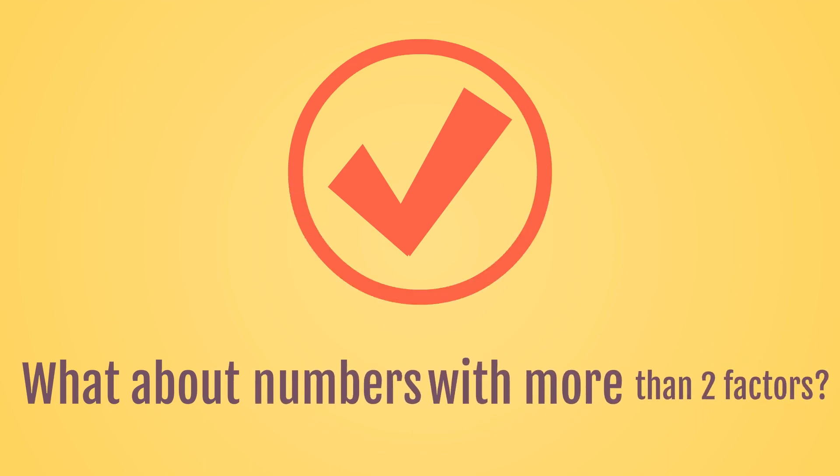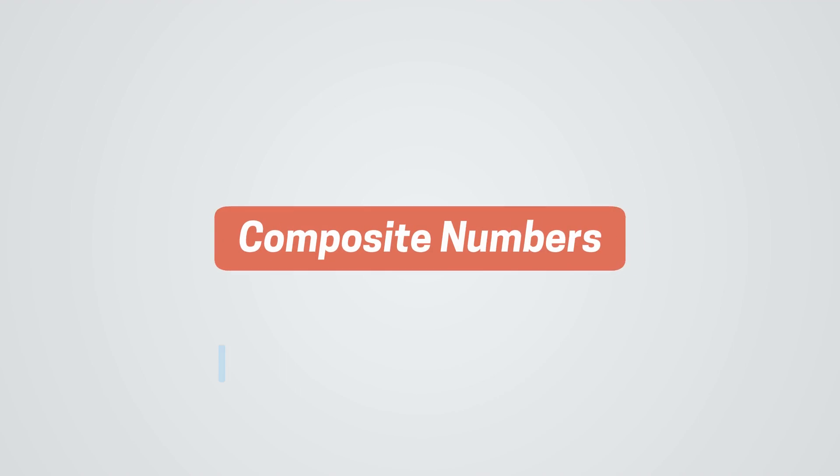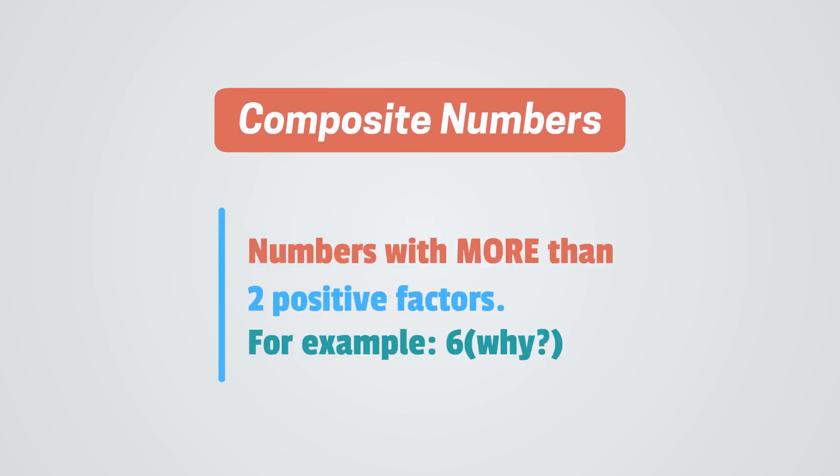What about numbers with more than two factors? These numbers are called the composite numbers. The composite numbers are numbers with more than two positive factors. For example, 6 is a composite number because not only are 1 and 6 factors of 6, but the numbers 2 and 3 are also factors of 6.